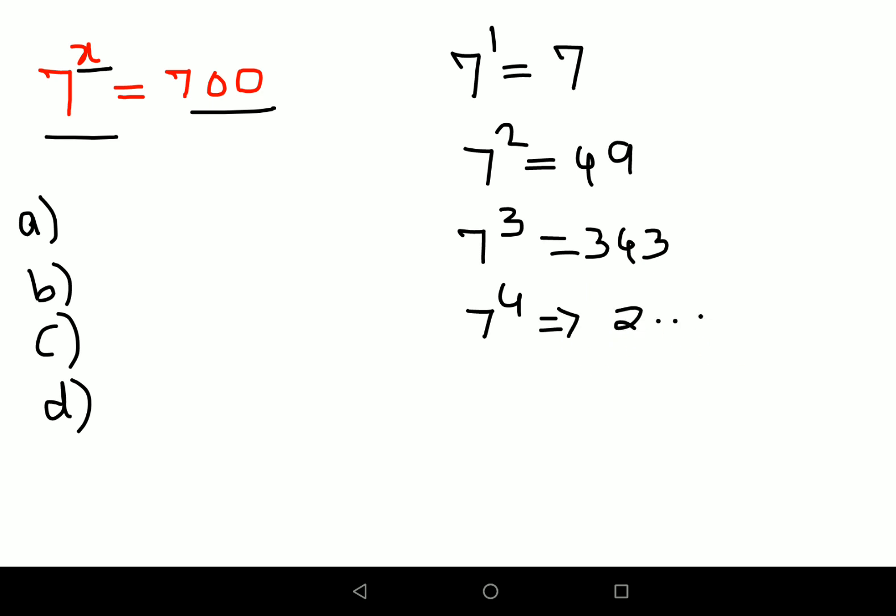So here we know that the value of x has to be greater than 3 and less than 4, it has to lie between that. So in case they had given you options such as 2.something, 3.something, 4.something and 5.something, then in that case you could have taken option B directly. Now normally what happens is these kind of questions are also asked in proper exams.